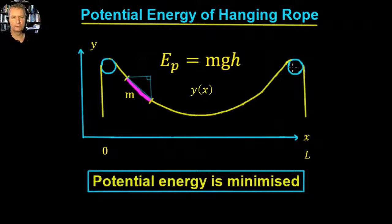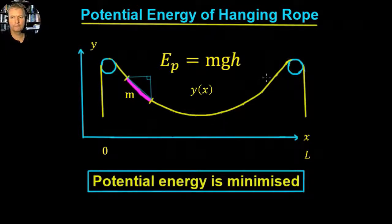We're going to use calculus in order to do that. What we're going to do is split the rope into infinitesimal little sections. We linearize the problem — we imagine the rope is built up of an infinite number of tiny straight lines.